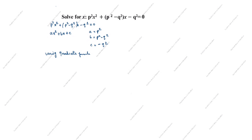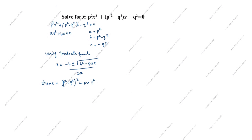Using the quadratic formula: x = [-b ± √(b² - 4ac)] / 2a. First, we will calculate b² - 4ac. b² - 4ac = (p² - q²)² - 4 × p² × (-q²).